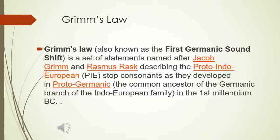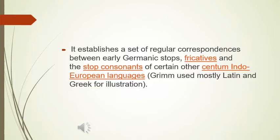Grimm's Law, also known as the first Germanic sound shift, is a set of statements named after Jacob Grimm and Rasmus Rask describing the Proto-Indo-European stop consonants as they developed in Proto-Germanic in the first millennium before Christ. It established a set of regular correspondences between Germanic stops, fricatives, and the stop consonants of certain other Indo-European languages. Grimm used mostly Latin and Greek for the illustration.